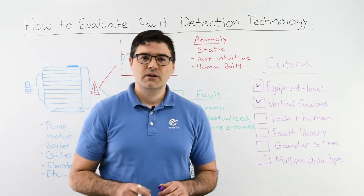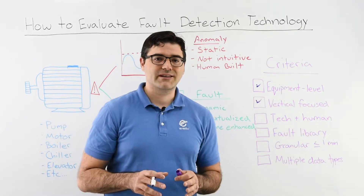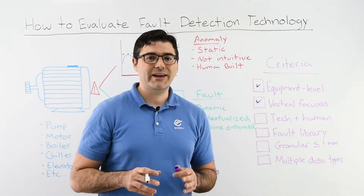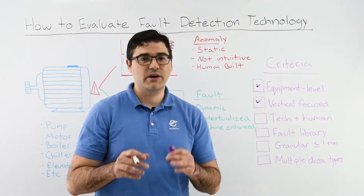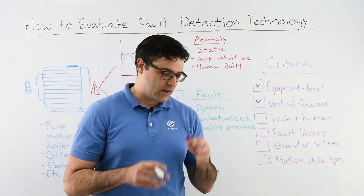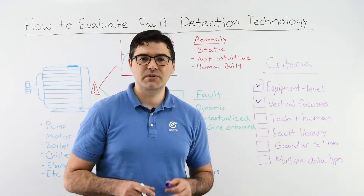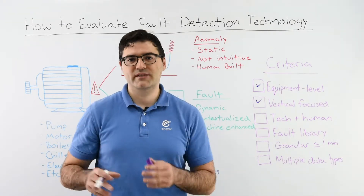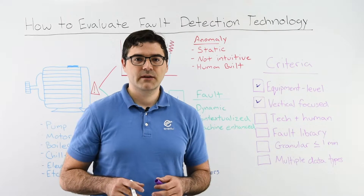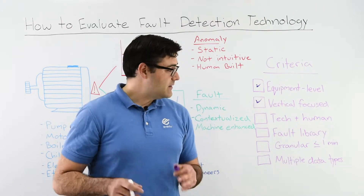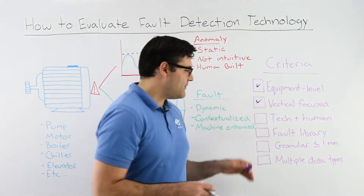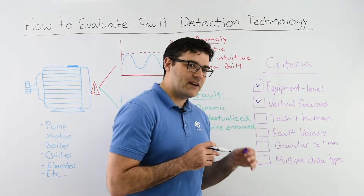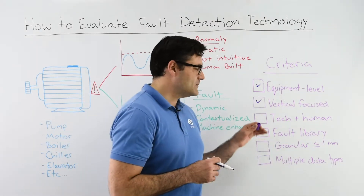Number two: vertical focus. You want to make sure that the solution you're looking at focuses on your industry, whether it's industrial buildings, commercial office buildings, or residential buildings, because the faults that you might expect will be different.